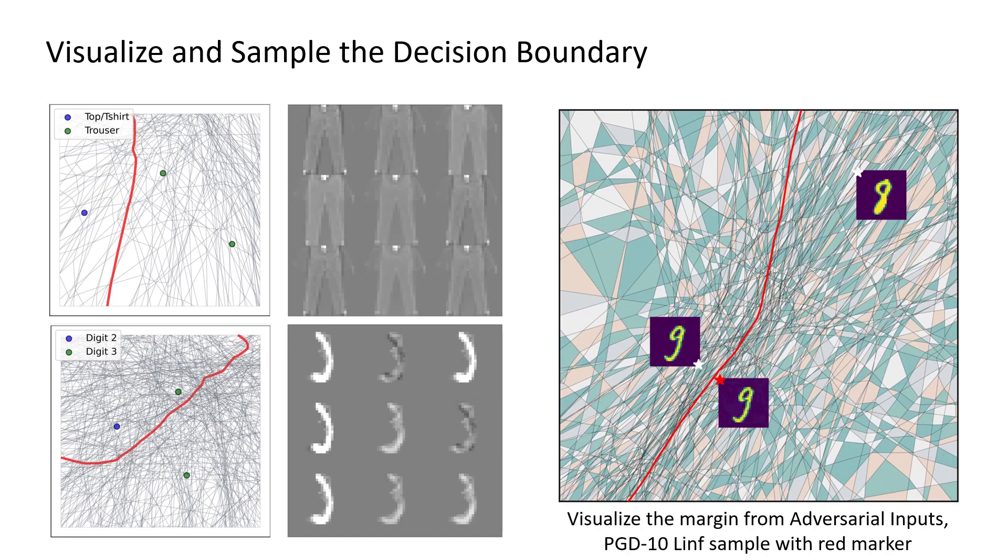Using SplineCam, we can also compute the margin for different training samples as well as adversarial examples. In the plot to our right, we show an adversarial example generated via projected gradient descent as well as two training samples.